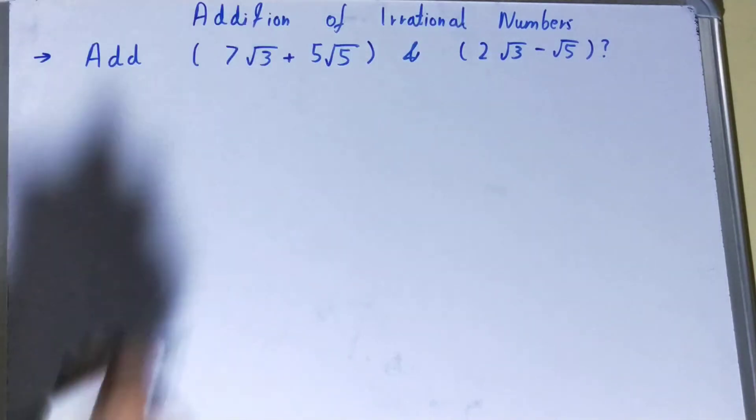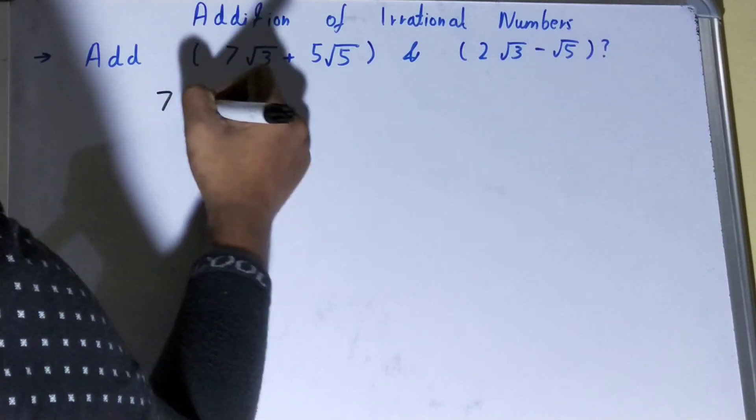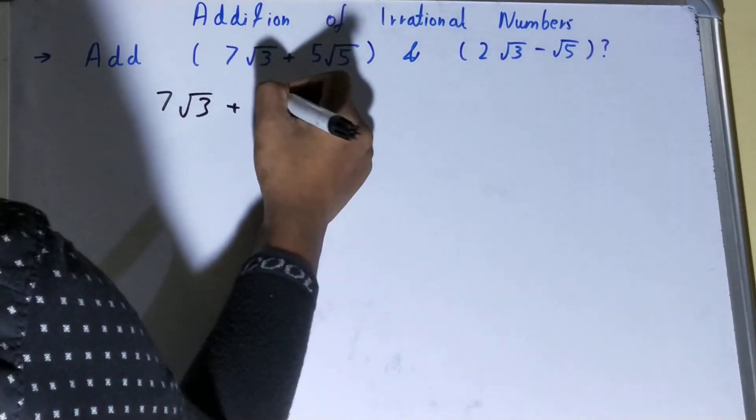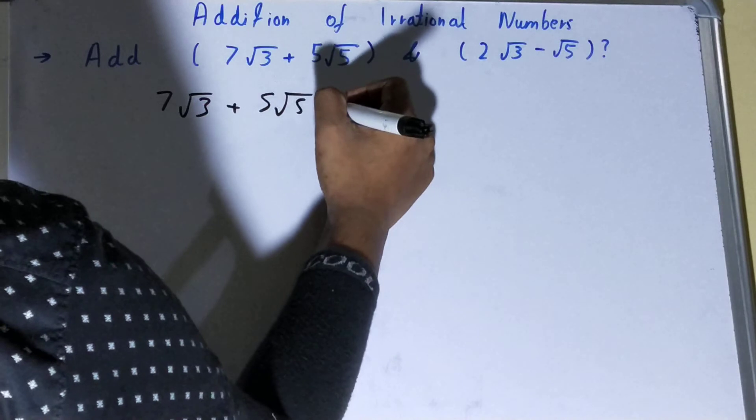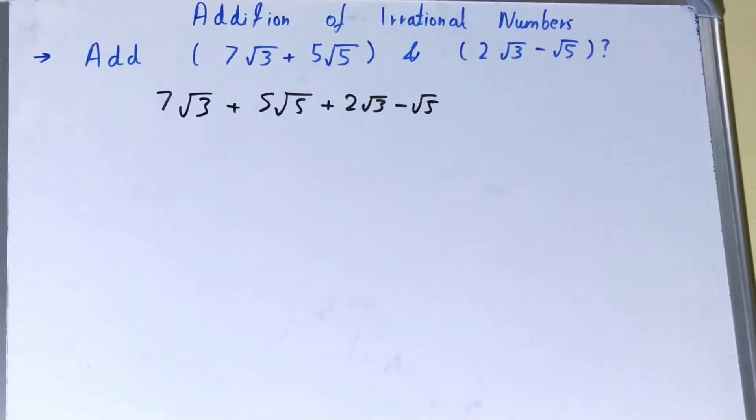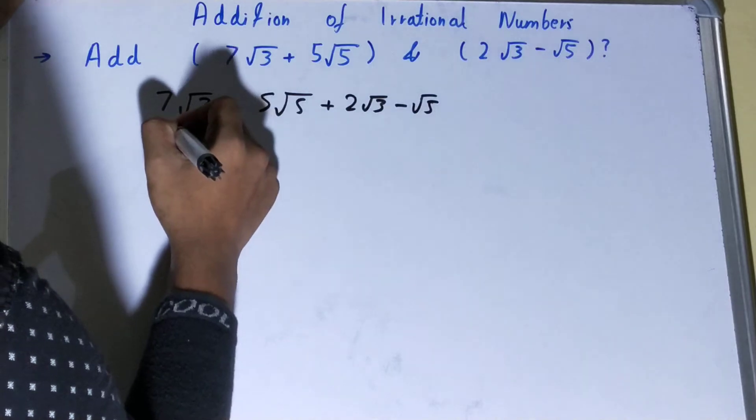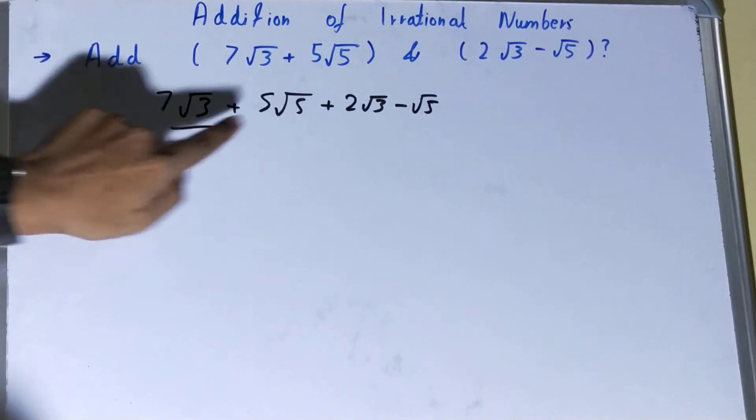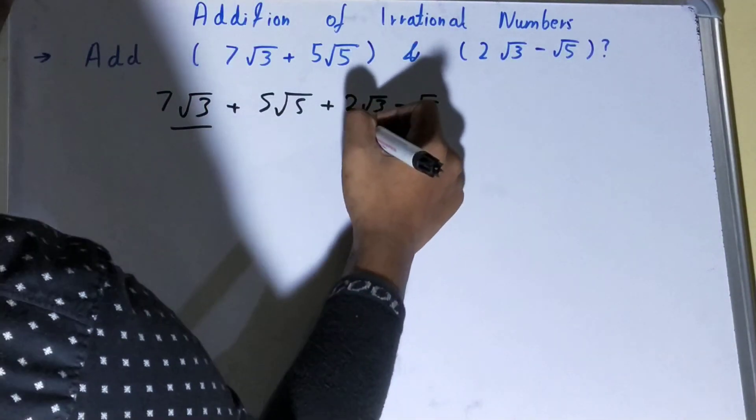just add all of them normally, like this: 7√3 + 5√5 + 2√3 - √5, just like we add normal numbers. But that's not the case. What you need to do is categorize them. If it is √3, you need to form groups of the numbers